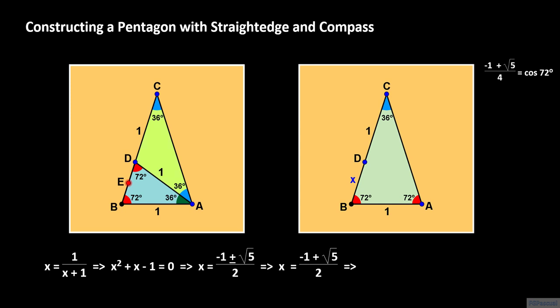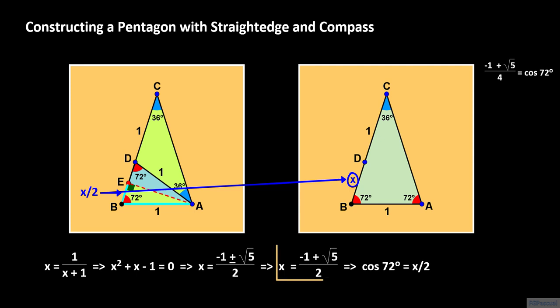We proceed by locating the midpoint E of segment BD. Segment AE is the perpendicular bisector of segment BD because triangle ABD is isosceles, and so triangle ABE is a right triangle. Now segment BE is adjacent to the 72-degree angle, and its length is X over 2 because the length of BD is X. So cosine 72 degrees equals X over 2, the adjacent side, divided by the hypotenuse 1. Therefore cosine 72 degrees equals X over 2. With X equal to negative 1 plus the square root of 5, all over 2, cosine 72 degrees equals negative 1 plus the square root of 5, all over 4.